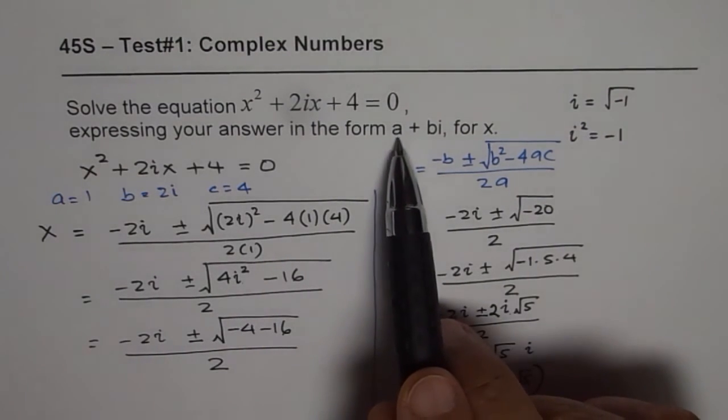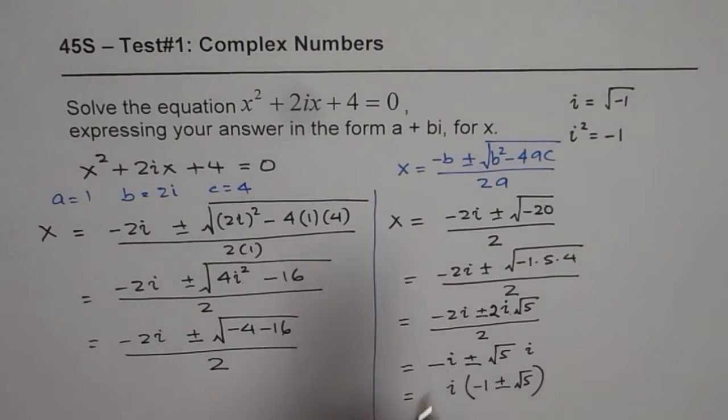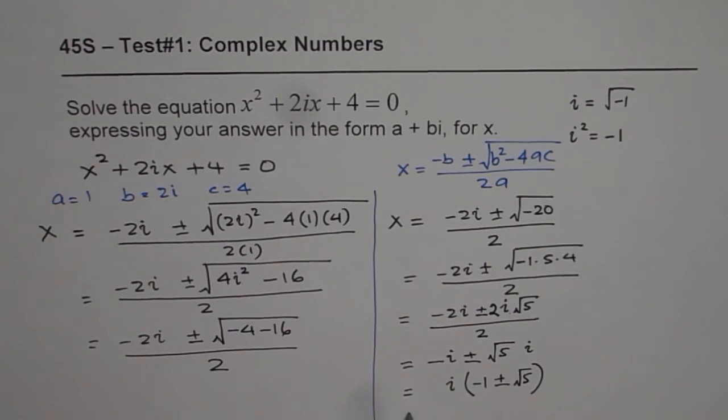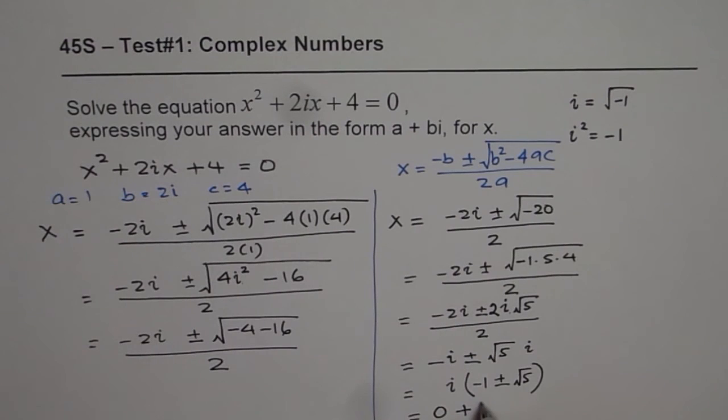If you really want to, the real number here is 0, and b is equal to minus 1 plus or minus square root of 5. So let me write this as 0 plus, within brackets, minus 1 plus or minus square root of 5, i. So that becomes the solution in the standard form.